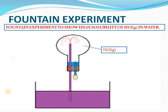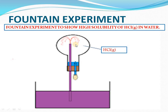Now we take up the fountain experiment, which demonstrates the high solubility of hydrogen chloride in water. An inverted round-bottom flask is set up. There is a tube through which solution can move, and a stopper conveying water. When you press it, water enters the flask. Because HCl gas is highly soluble in water, the water absorbs the HCl gas inside the flask.